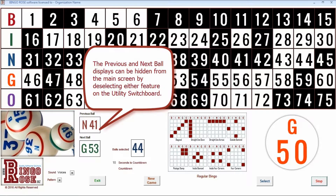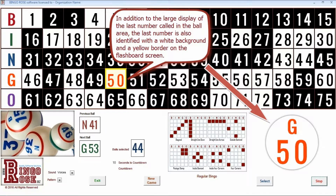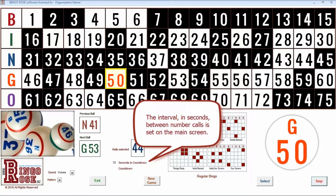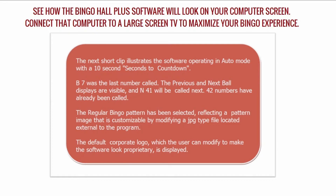The previous ball and next ball features were added to meet the specific needs of certain customers. Each feature can be hidden from the main screen display by removal of the associated checkmark on the utility switchboard. The crisp appearance of the numbers on the main screen is achieved by use of the Oswald font. An installation file for this font is installed with the software. The appearance of the main screen can be customized with your organization's logo, pattern displays can be modified to meet your needs, and some display detail can be hidden if desired. Controls not required during a game are automatically hidden from view.